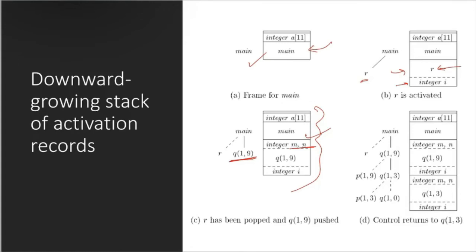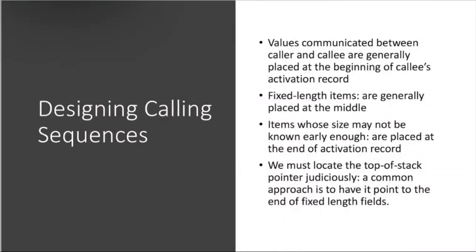Integers m and n are stored as local data. Then main calls the quicksort function with elements one to nine. Quicksort one-to-nine has not ended — it is calling another instance of quicksort with elements one to three. This is how the activation record is maintained on the stack.